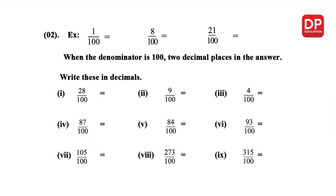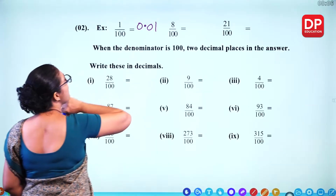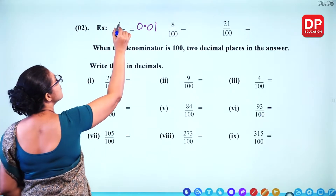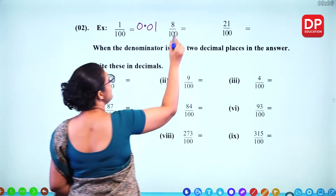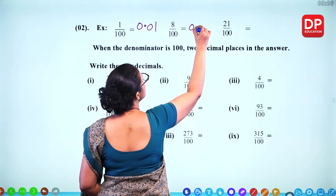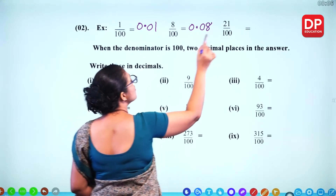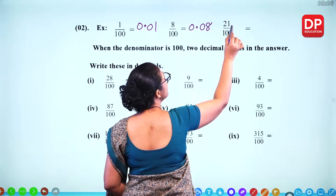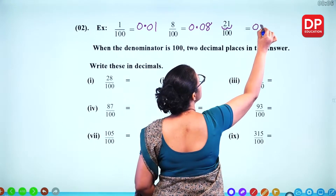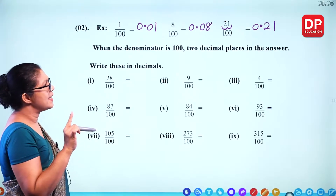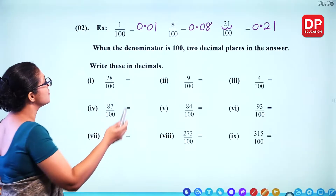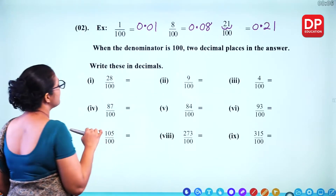Now we will look at dividing by 100. The denominator is 100, so you get 0.01. You move 2 places to the left. So 8 over 100 gives 0.08, and 21 over 100 gives 0.21. When the denominator is 100, there are 2 decimal places in the answer.